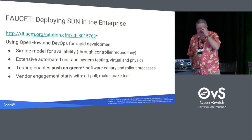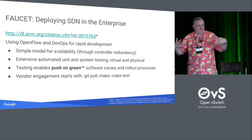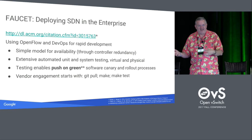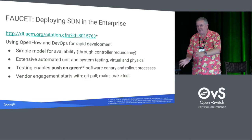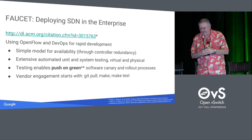For us, vendor engagement starts with pushing our tests to them and saying: if you want to be a device in our network, the way you get to have a talk with us about what your device does is you pass our integration tests. There's a GitHub repo — clone that, make, make test. When you've done that, I'm all about having the conversation about how many flows, what tables, how many tables, matches and actions and all that. But in order to even get to that conversation, we have to know we can program your device. The way we know that is you pass the integration tests.